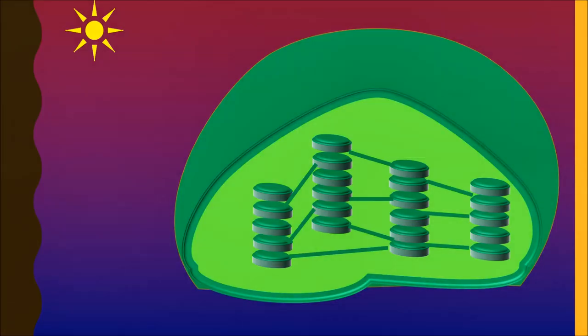In the presence of sunlight, the grana traps the sun rays to stimulate photolysis of water. The photolysis of water results in the production of oxygen and H plus ions. Oxygen is released out of the plant, whereas the H plus ions are utilized to produce ATP and NADPH molecules.